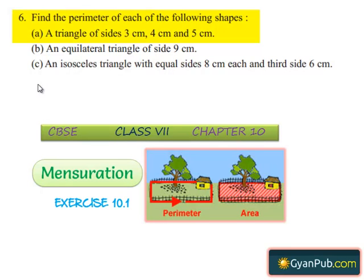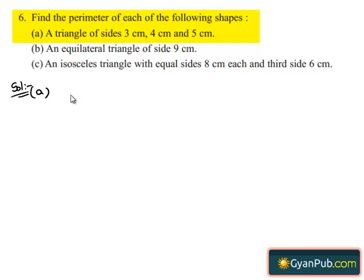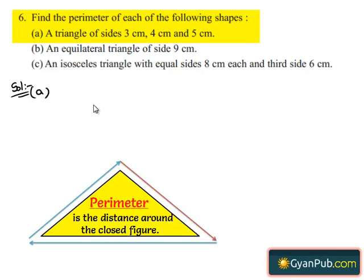Moving on to the sixth question, given to find the perimeter of each of the following shapes. First we should know what is meant by perimeter. Perimeter is the distance covered along the boundary forming a closed figure when you go around the figure once. Here we should find the perimeter of the triangle.